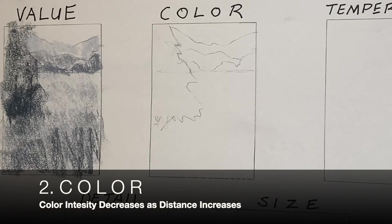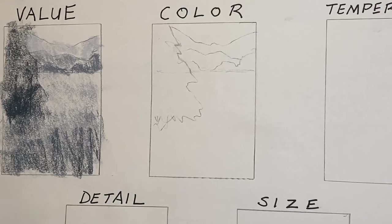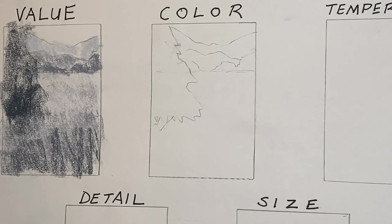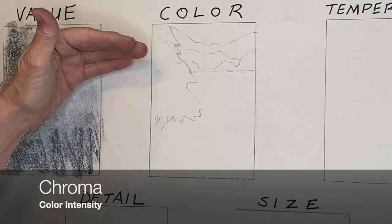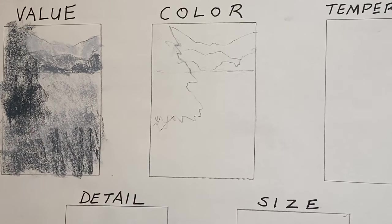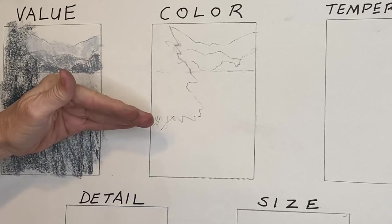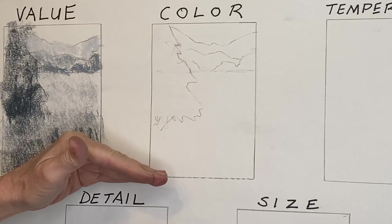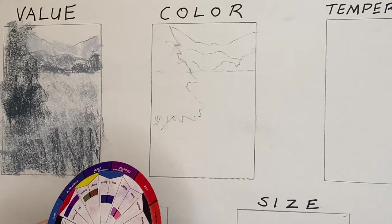Next we'll talk about color — another name for color is hue. What I'm focusing on here is the intensity of color. The way color works with the laws of our world is that colors get less intense as they recede. As they come forward they are more intense; as they recede they are less intense.